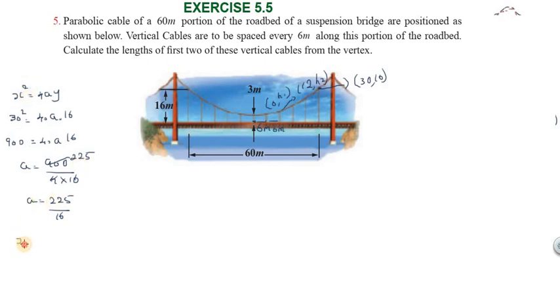So a equal to 225 by 16. Now we substitute this value of a into the equation: x square equal to 4 into 225 by 16 into y, which simplifies to x square equal to 225 by 4 into y.